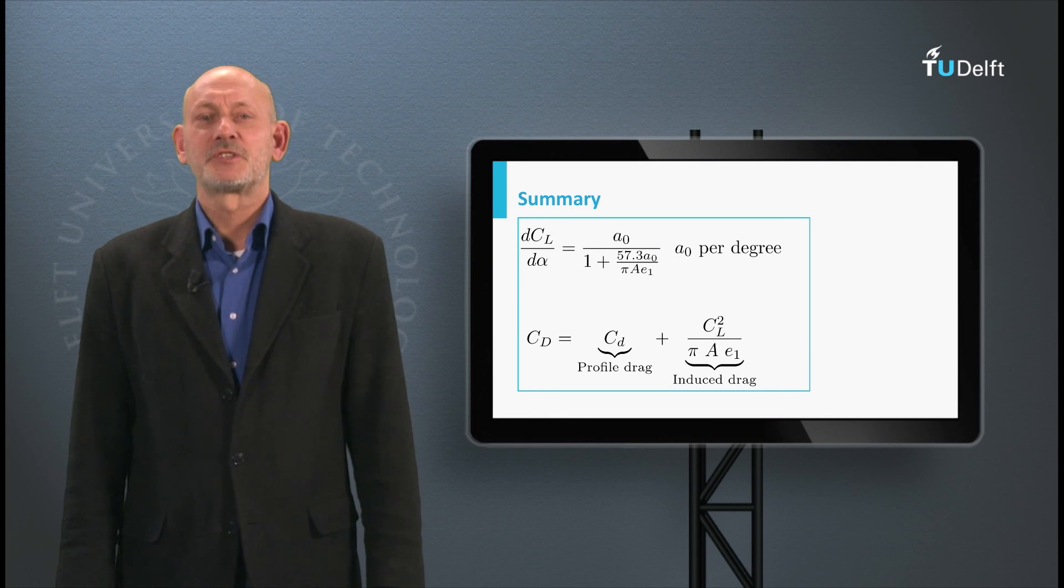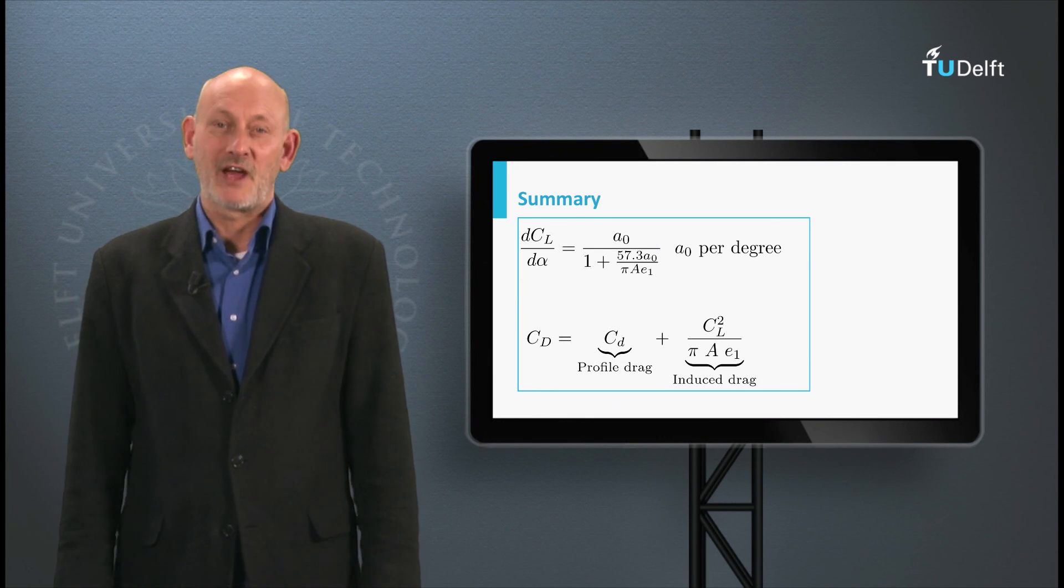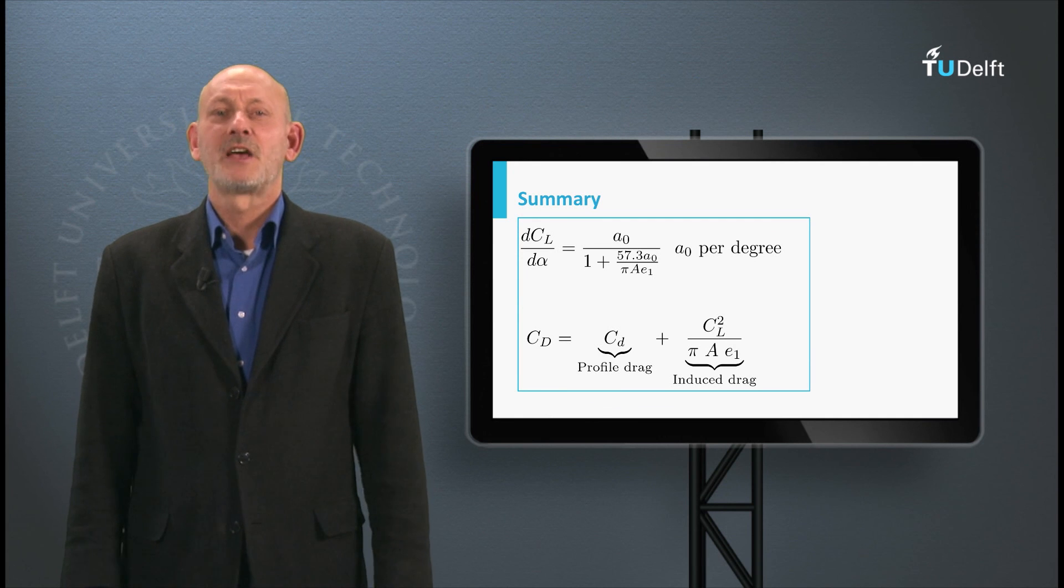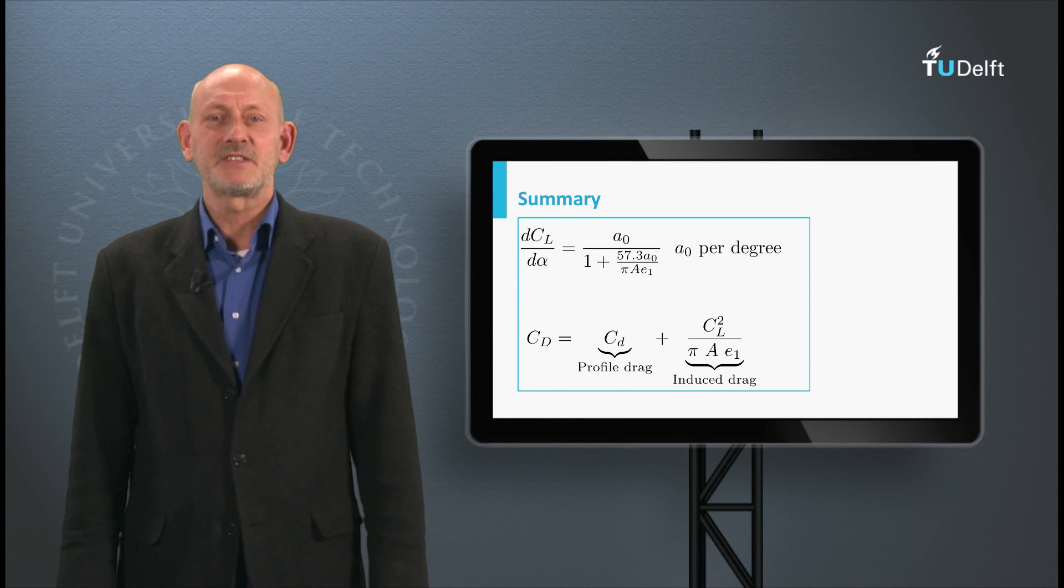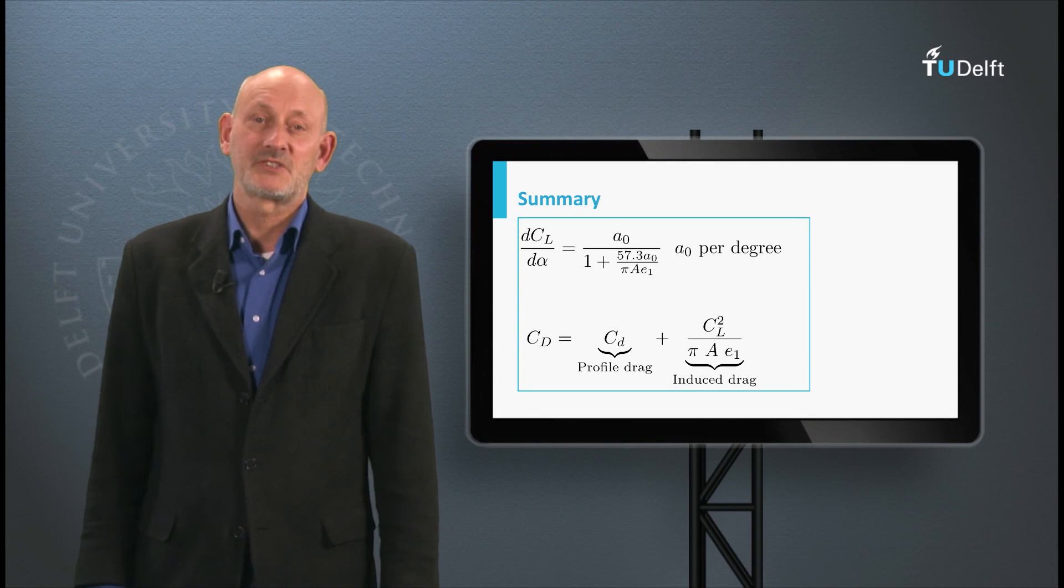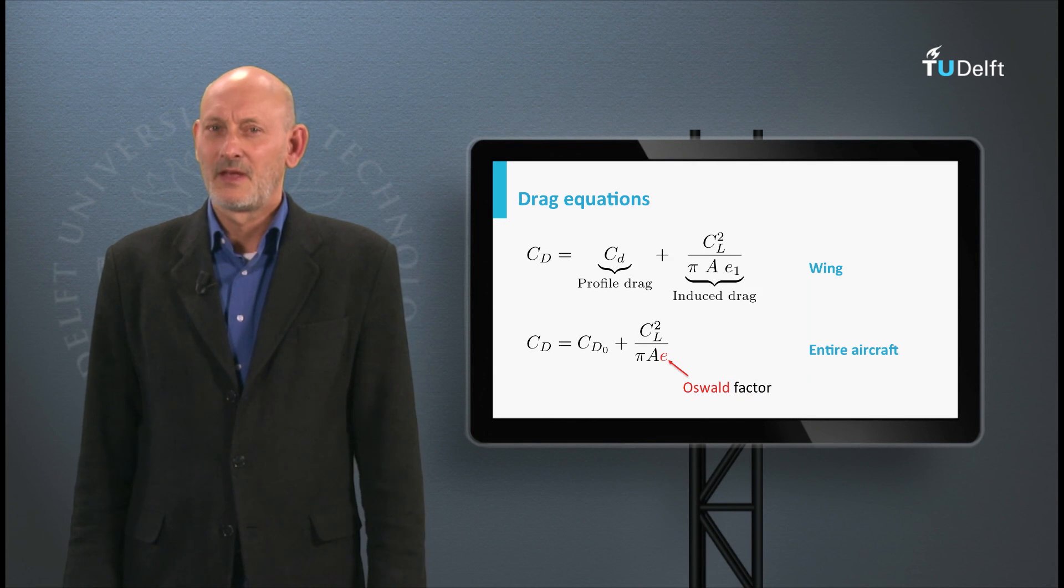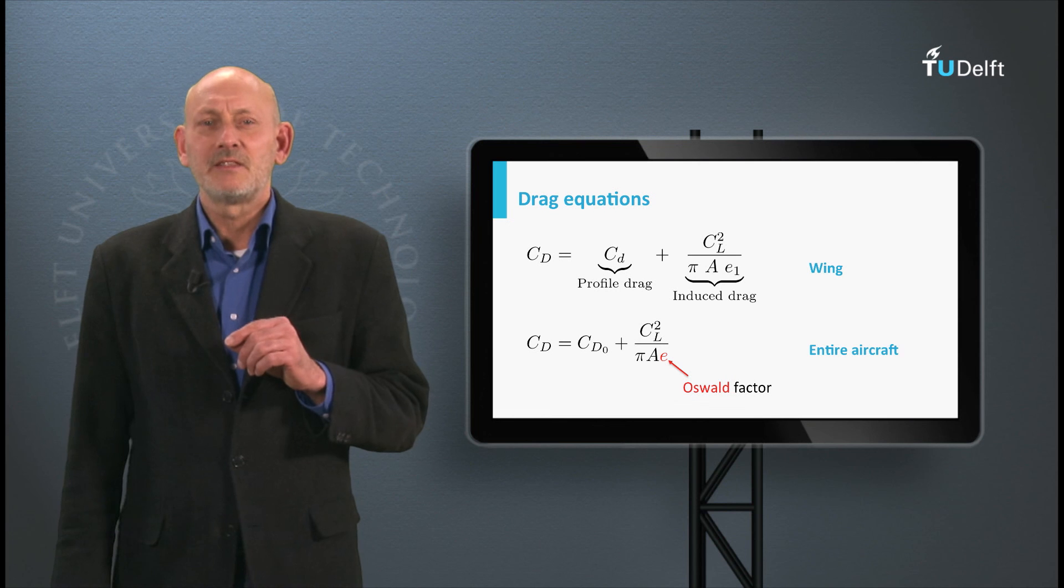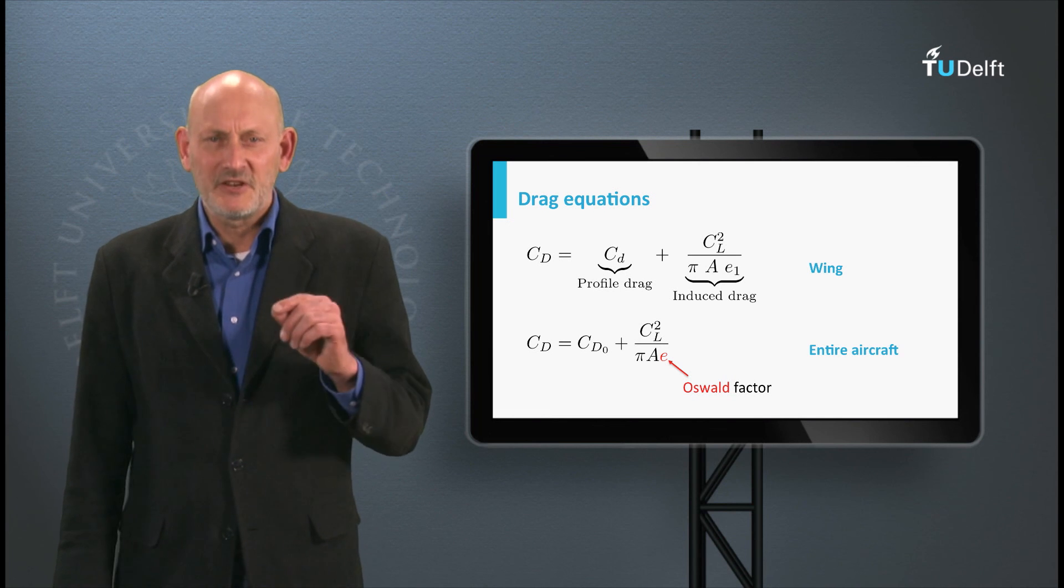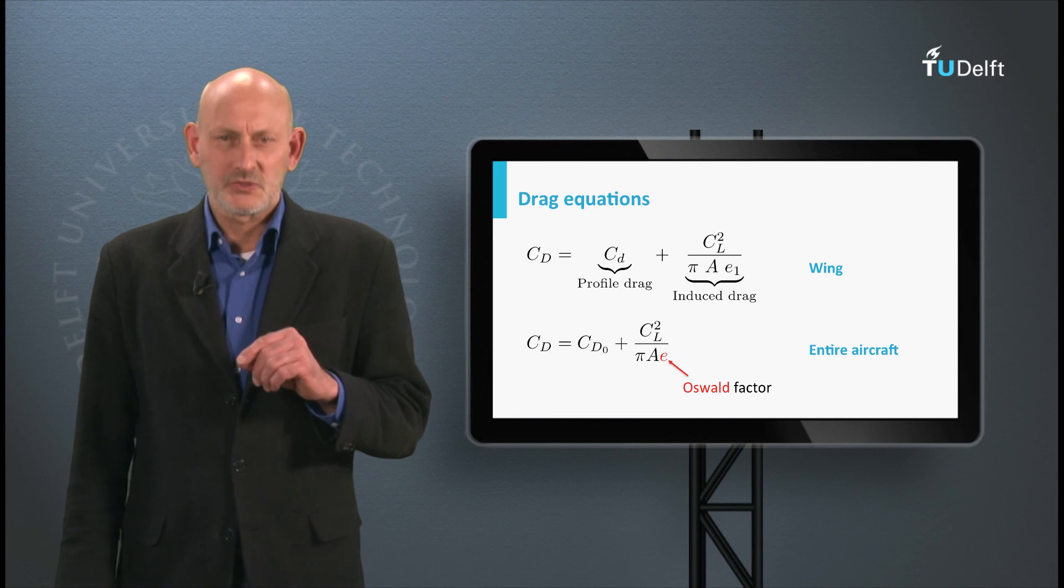This slide shows the main expressions for the wing lift and drag. The induced effects of the presence of wing vortices decrease the wing lift slope and increase the wing drag significantly. The higher the aspect ratio of the wing, the smaller the induced effects on lift and drag.